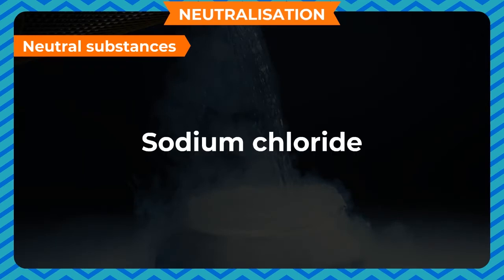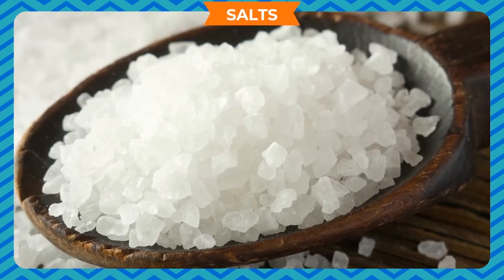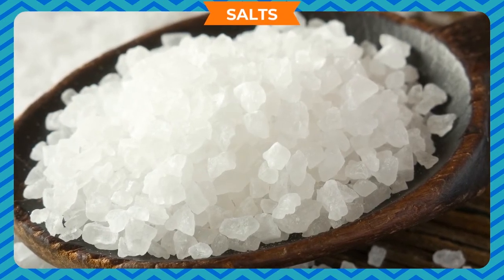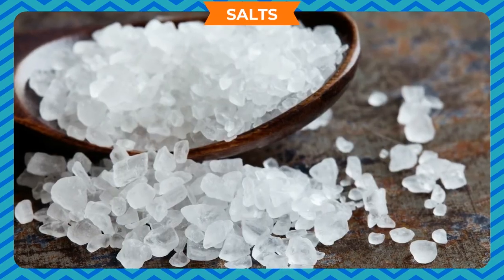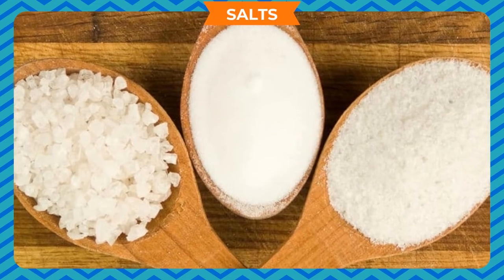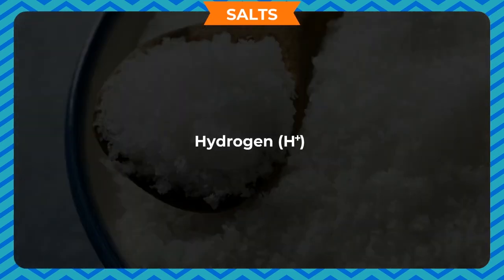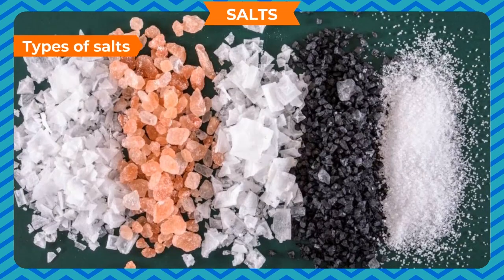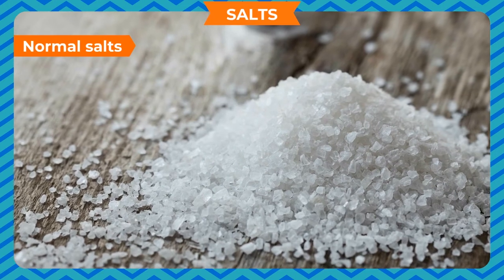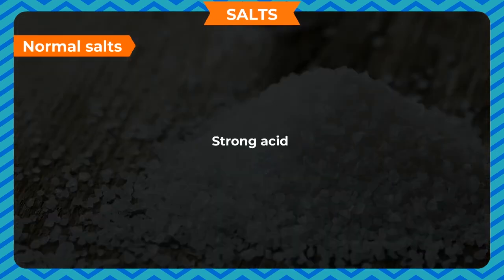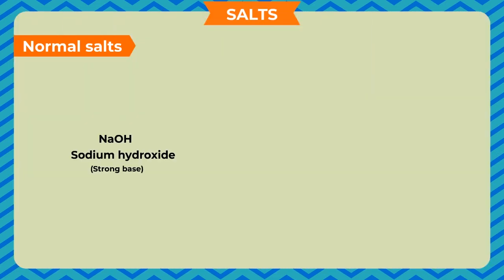Neutral substances — substances that are neither acidic nor basic are said to be neutral. Examples: water, sodium chloride, hydrogen, oxygen, and nitrogen. Salt is the product of neutralization between an acid and a base. A salt is a compound made up of two radicals: the acid radical (negative, obtained from an acid) and the basic radical (positive, obtained from a base). A salt has neither H+ nor OH− in its formula. Example: sodium chloride (NaCl). Types of salts: normal salts are formed from a strong acid and a strong base — they contain neither H+ nor OH− ions. NaOH + HCl → NaCl (normal salt) + water.